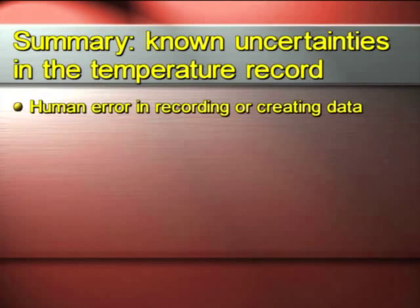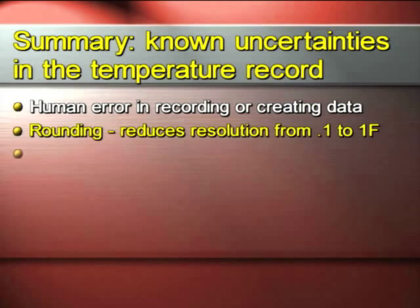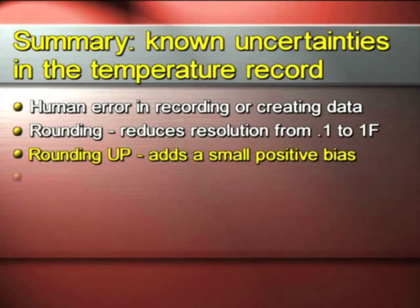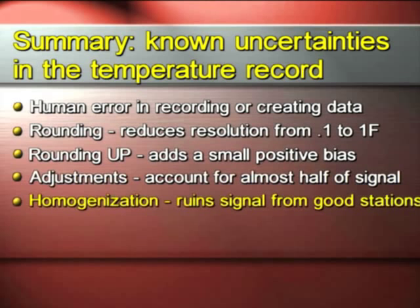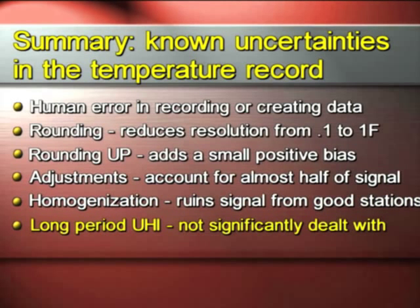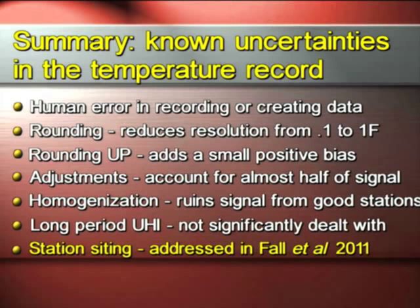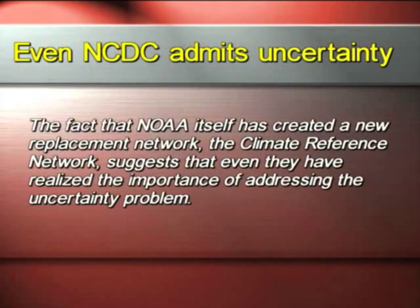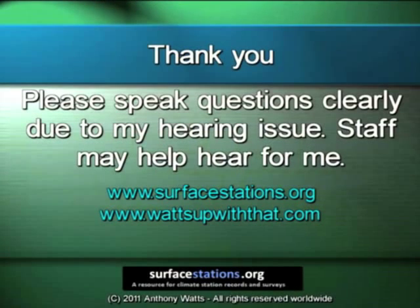In summary: there's human error in recording and creating data; there are rounding errors and rounding up which adds a small bias; there are adjustments accounting for almost half of the warming signal; homogenization ruins the signal from good stations; there's long-period UHI which is not dealt with appropriately; and there's station siting, which we've addressed in our paper and hope to address in a future publication. NOAA itself has closed stations and created the new Climate Reference Network, indicating that even they recognize the issue of uncertainty. Thanks much.